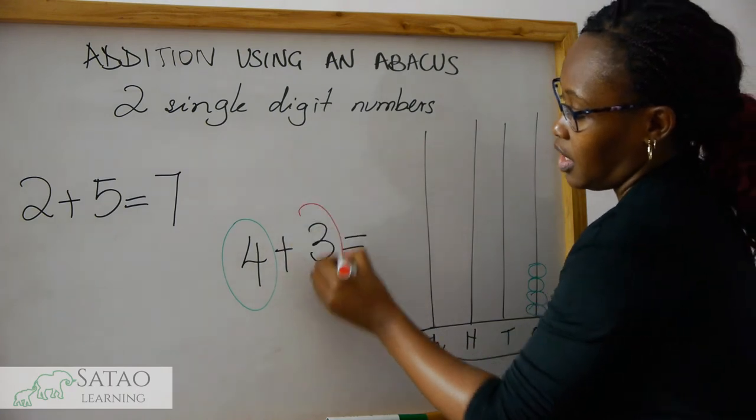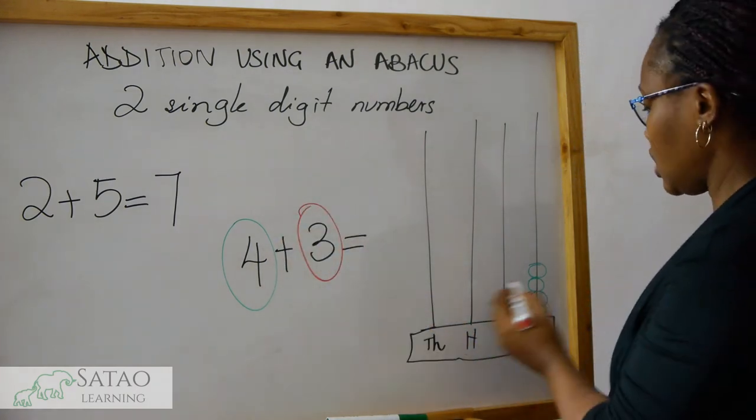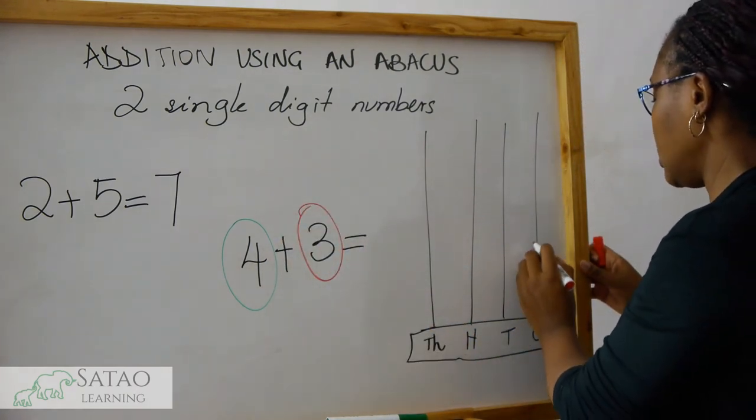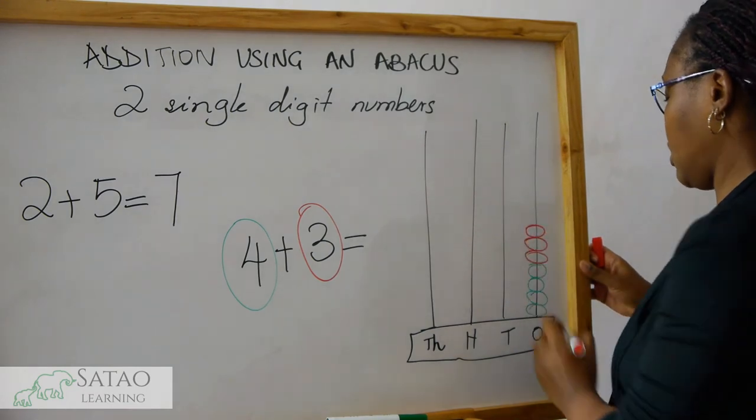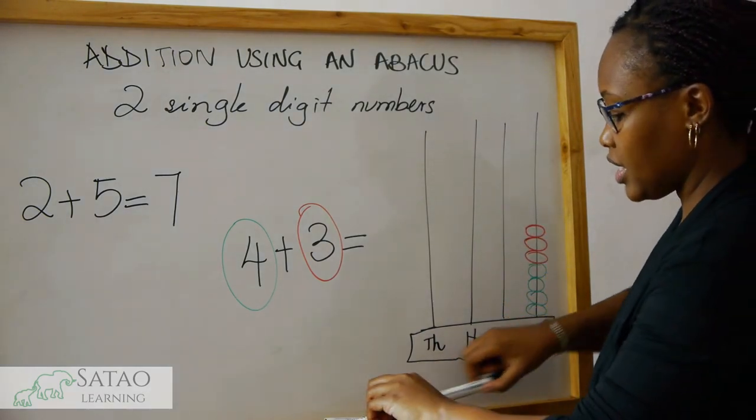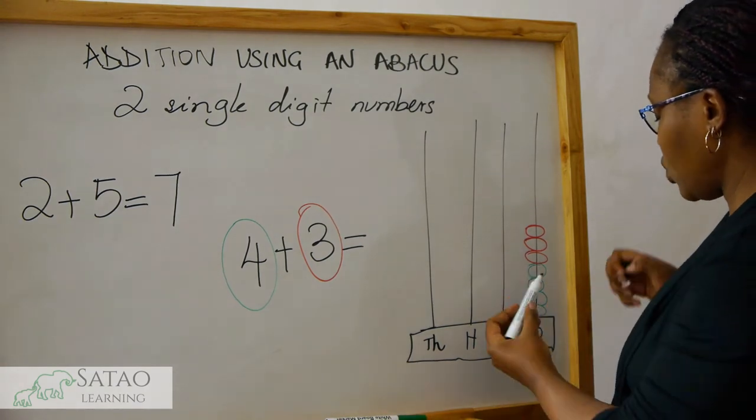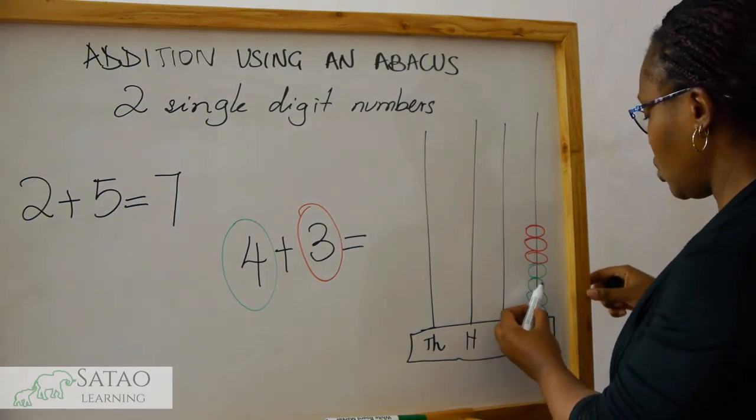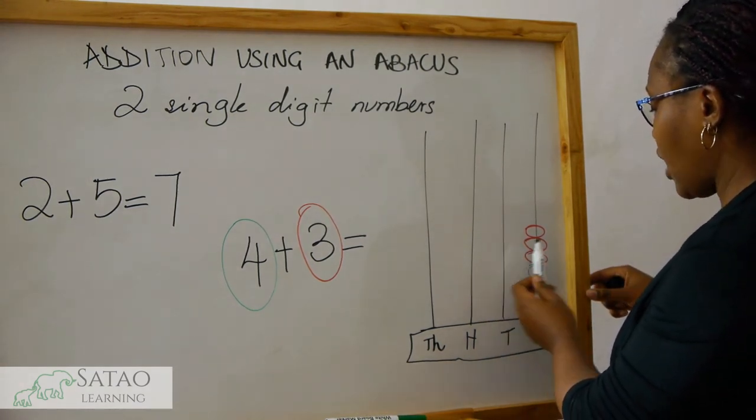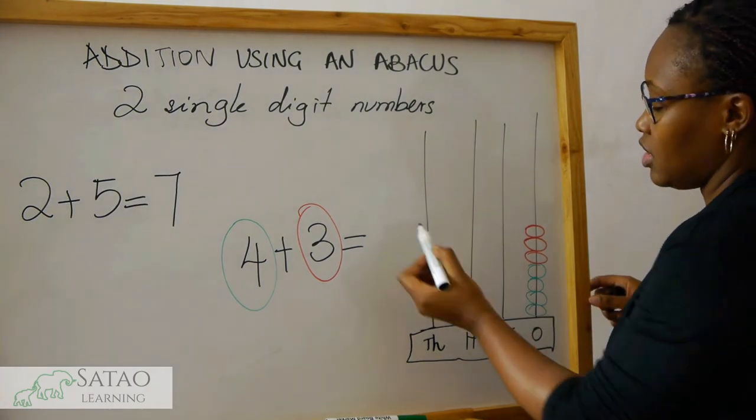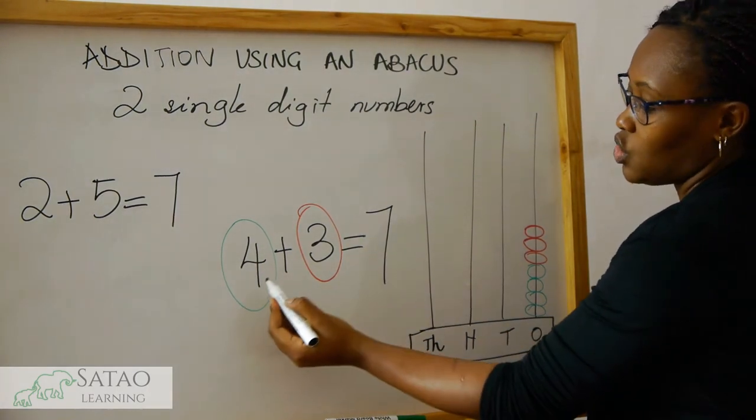That's three. We add three beads: one, two, three. Now what we do is we add up all the beads that we have put. One, two, three, four, five, six, seven. So those are seven.